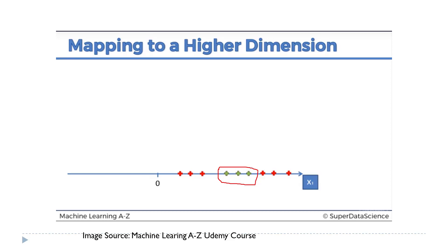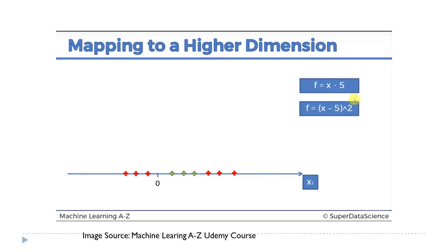By mapping these data points to a higher dimensional space we can find linearly separable data points. To understand this, let us apply a function f on the data points. This f function first subtracts 5 from x, shifting the data points to the left, and then squares these values. When we square the values, the one-dimensional data points are converted to a two-dimensional space.